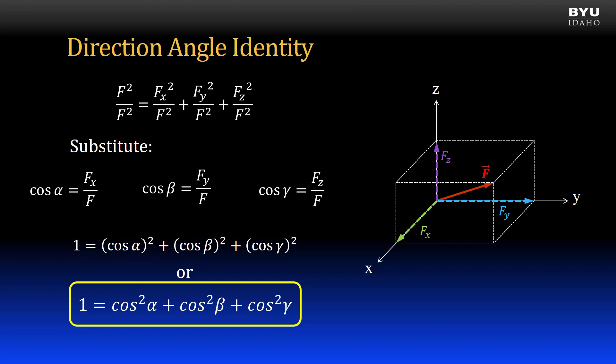It allows us to find the direction angle alpha, beta, or gamma, if only two are given. It turns out that this is a fairly common occurrence, since only two of the three angles are actually needed to define a vector, if we also know the vector's magnitude. Let's look at a quick example.